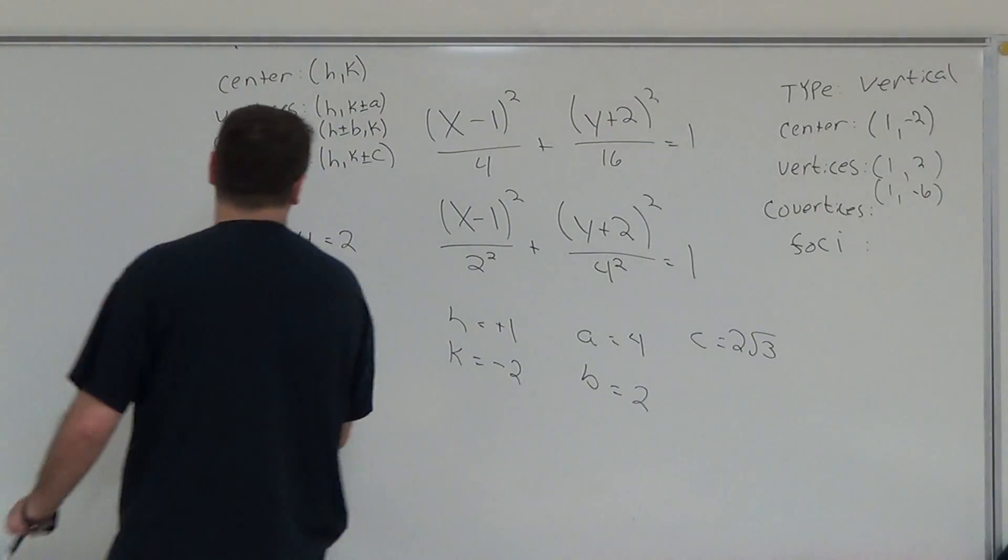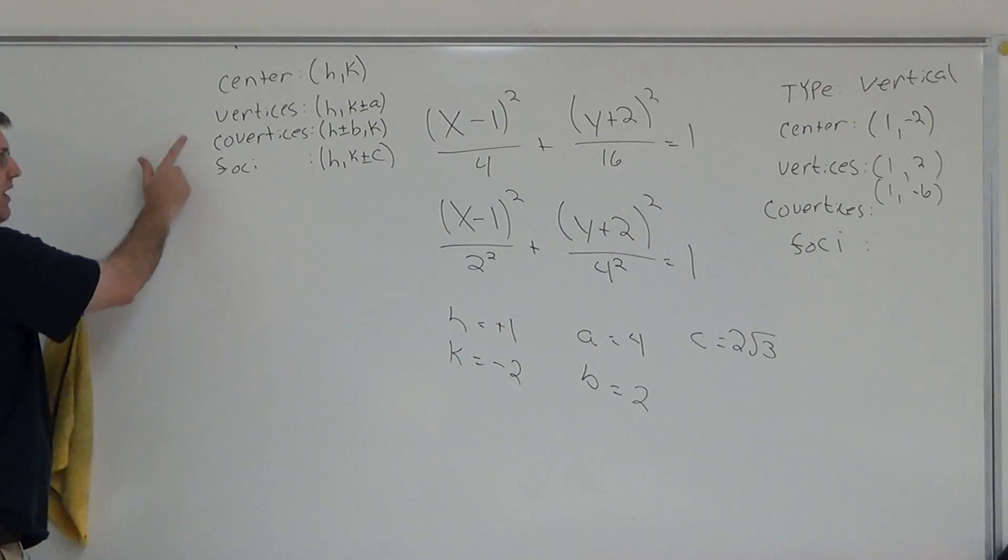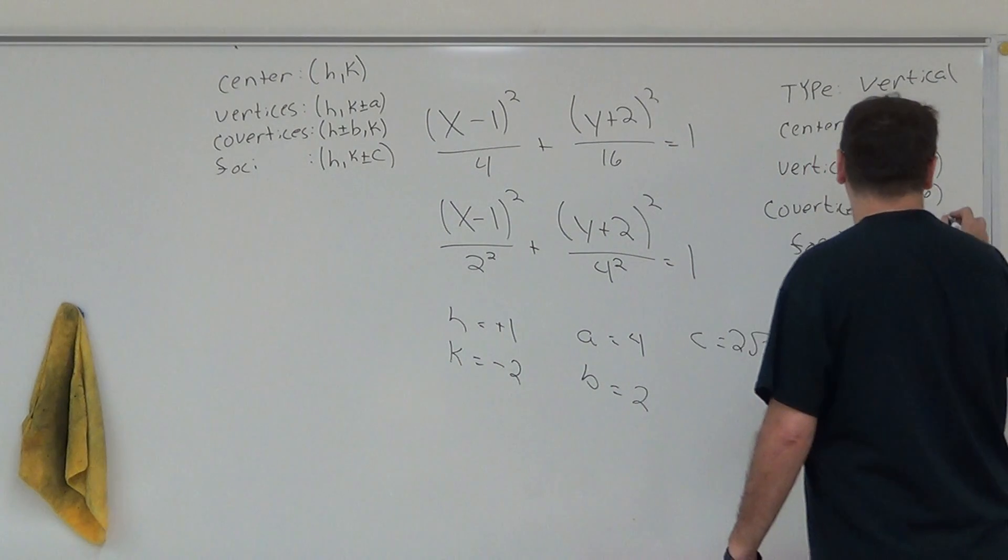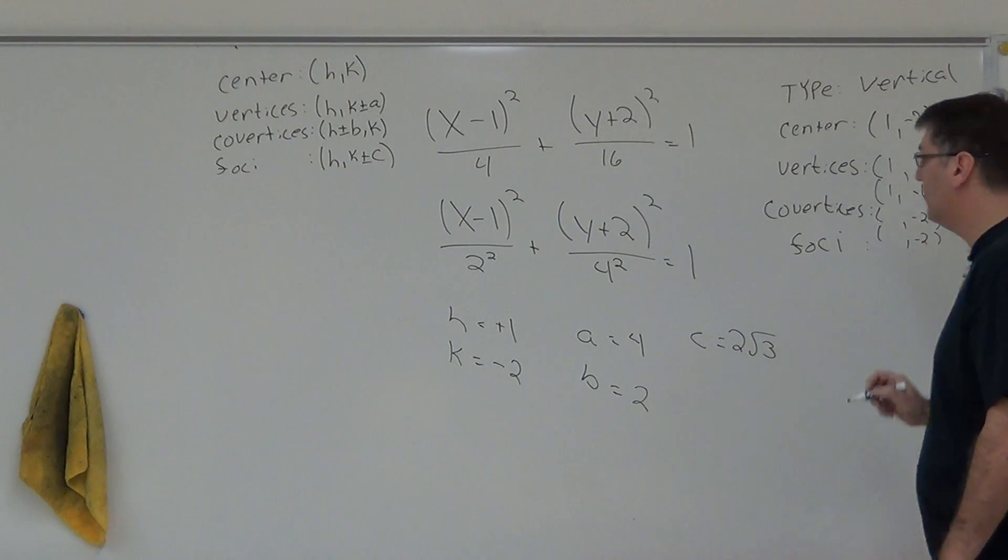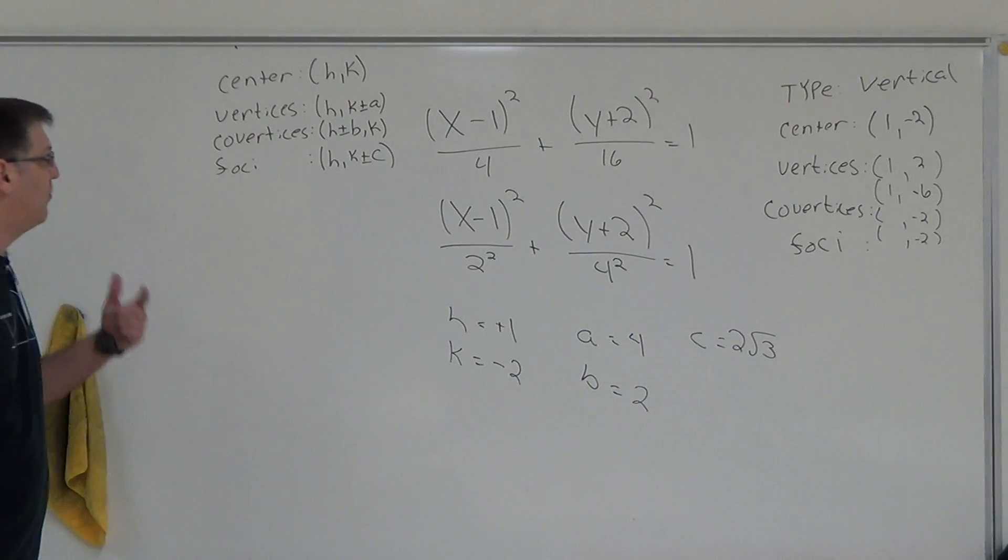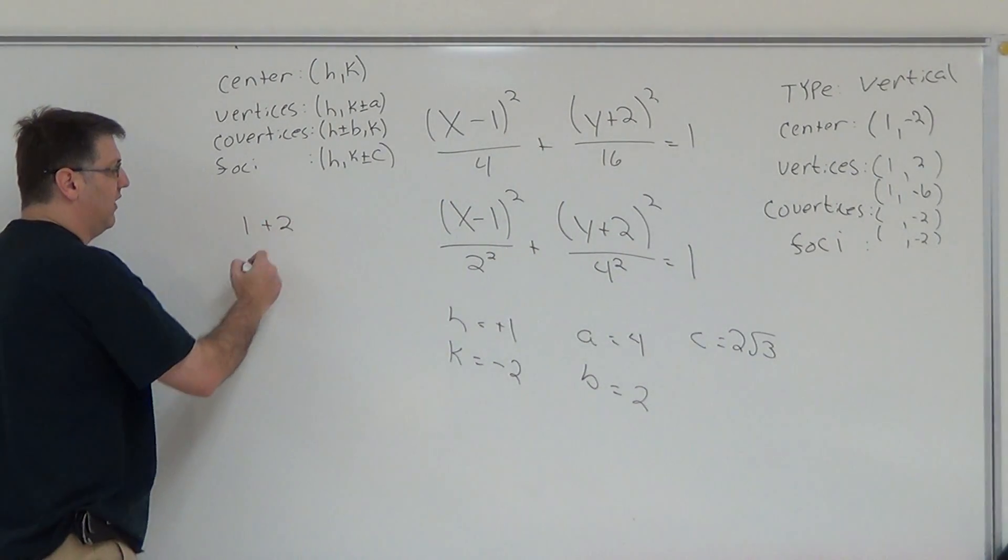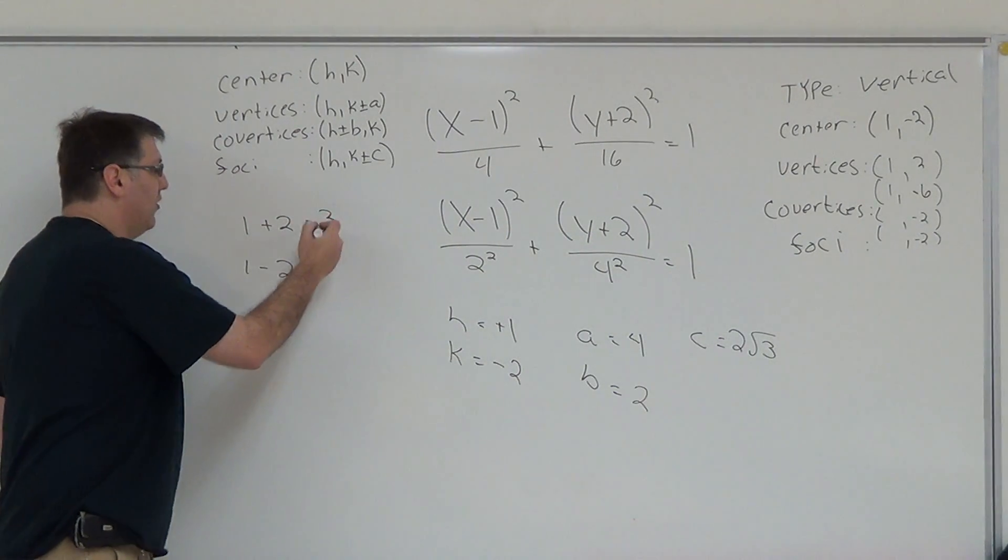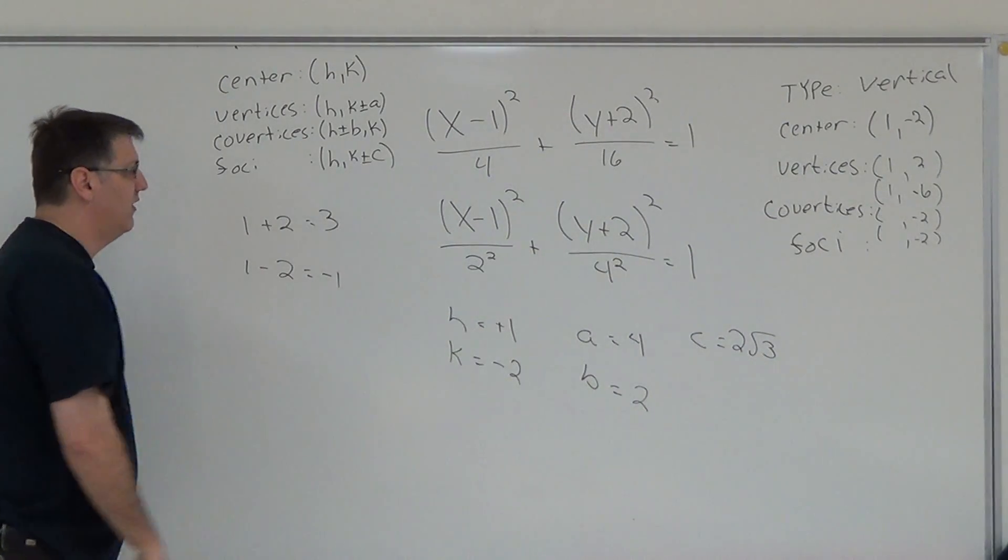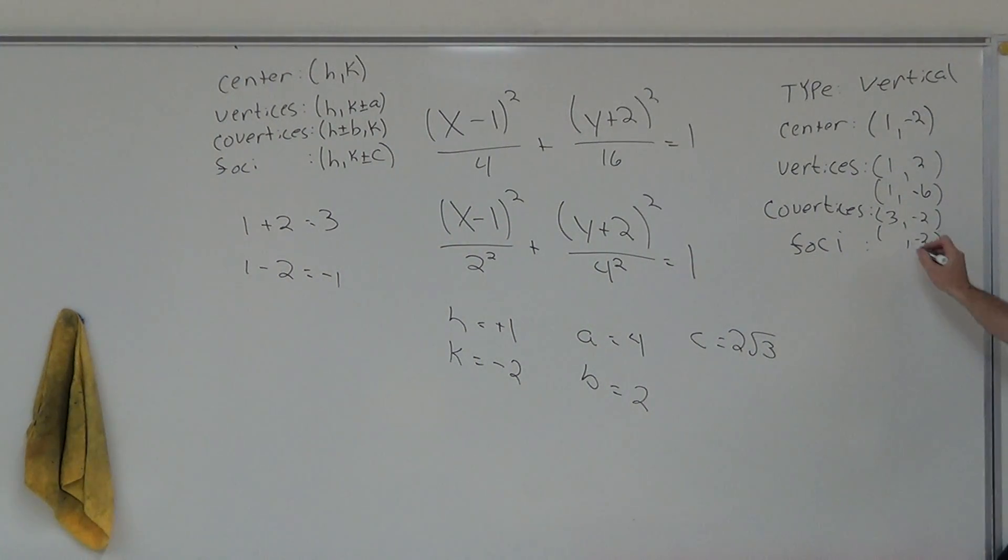You move right down the line. We find our co-vertices. This time, it is H plus or minus B, comma K. Your K doesn't change, so you're going to need to have two points. Your K doesn't change, so bring that over: negative 2, negative 2. Use your formula: H plus or minus B. My H is 1 plus 2 and 1 minus 2. Basic arithmetic there. 1 plus 2 is just 3. 1 minus 2 is nothing more than negative 1. Therefore, your co-vertices are 3, negative 2 and negative 1, negative 2.